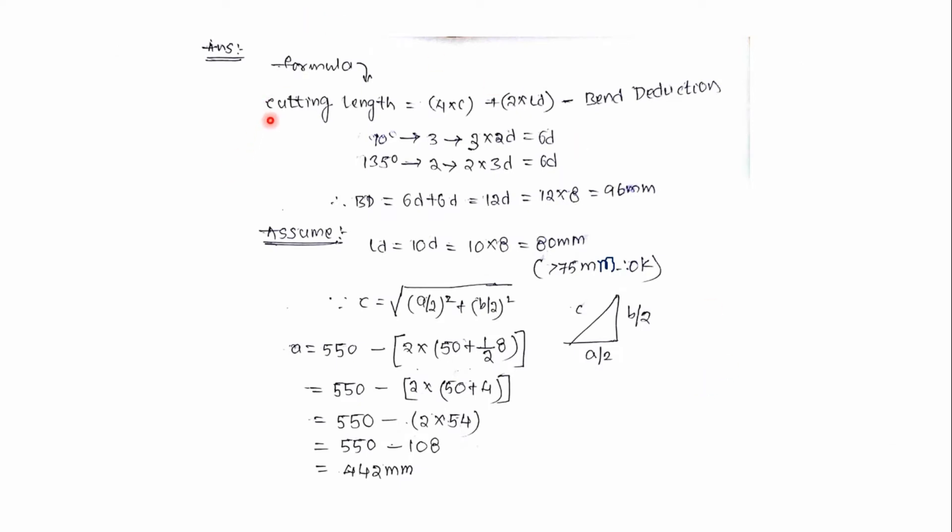This is the formula for calculating the cutting length of diamond stirrup: that is 4c plus 2ld minus bend deduction.